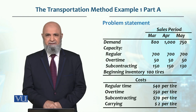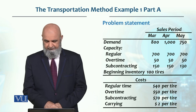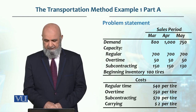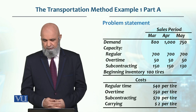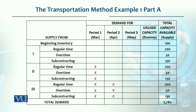Beginning inventory: we have 100 tires. This is a tire manufacturing company. Regular time cost is $40 per tire, overtime is $50 per tire, subcontracting is $70 per tire, and inventory carrying cost is $2 per tire per period.